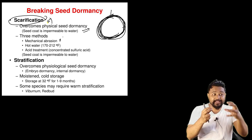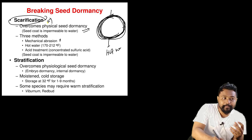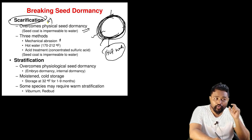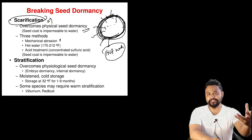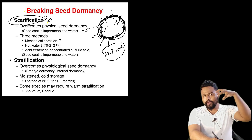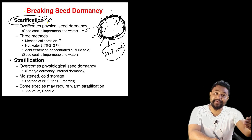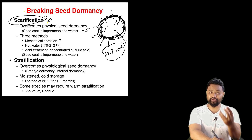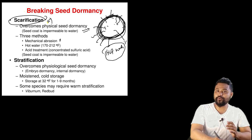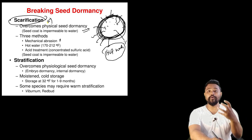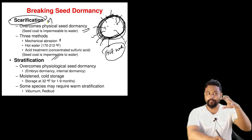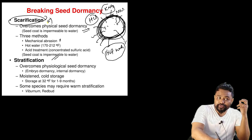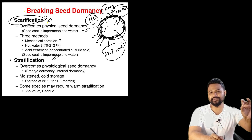Mechanical abrasion is one scarification method - physically breaking the seed coat. Chemical scarification is another approach. Chemicals such as HCl (hydrochloric acid), potassium nitrate (KNO3), NaOH (sodium hydroxide) at high or mild concentrations can be used as chemical treatments to break seed coat dormancy.